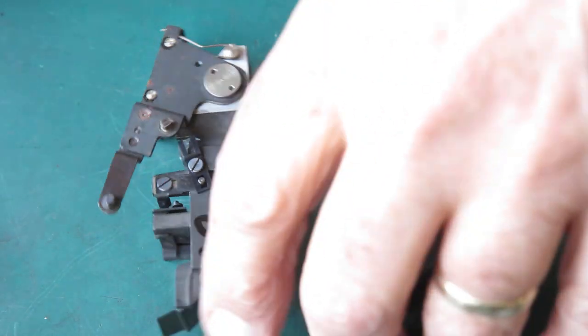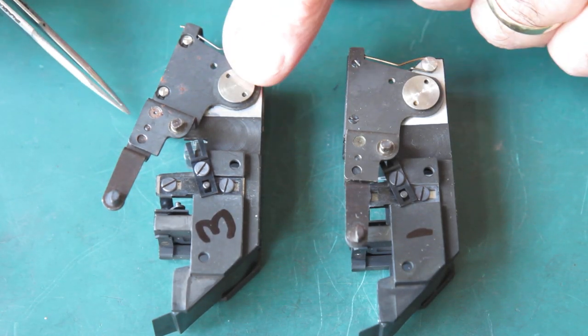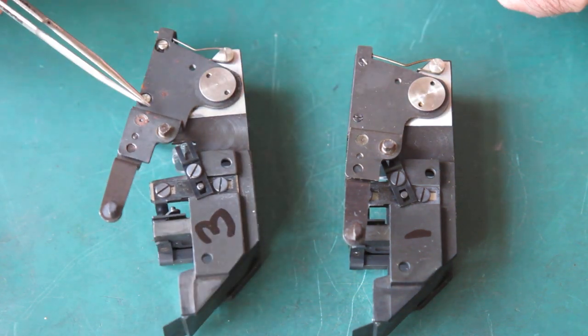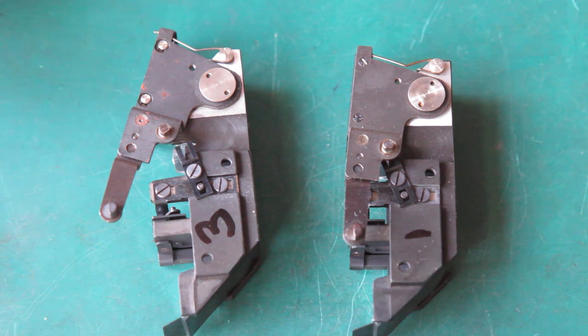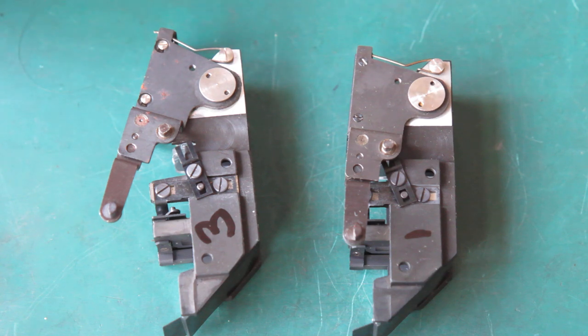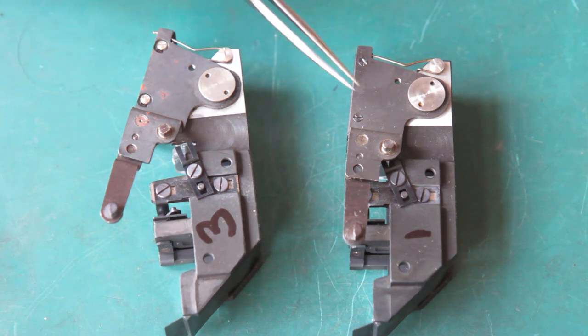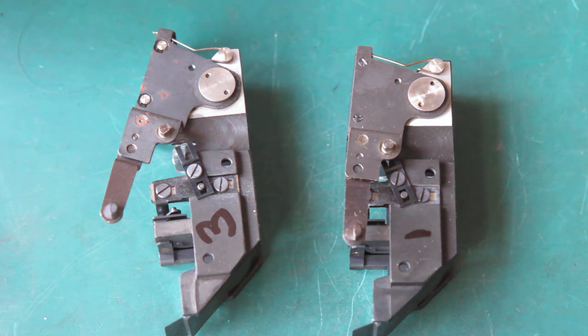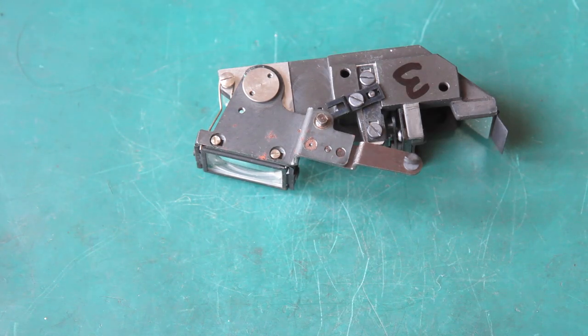When you're servicing cameras, the likelihood of you needing to move that front lens backwards or forwards along the arm is not very high. If that had been set in the factory I would assume that was correct. Functionally in the repair process, leave those two screws alone in both cases. There's no reason to start playing around with those.